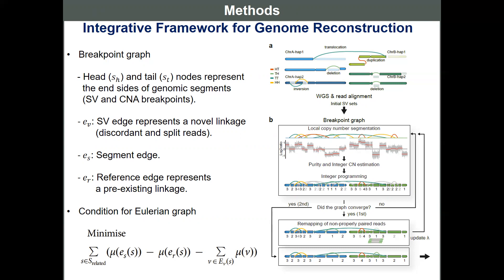Figure A shows an example of cancer genomes that we are going to reconstruct. Several kinds of SVs exist in the different haplotypes of chromosomes A and B. Whole genome sequencing data were generated from this genome, and we start from mapping assembly of WGS reads. From the mapping assembly, we construct a breakpoint graph that is composed of two types of nodes, head and tail nodes, and each node represents each end side of genomic segments, which can be obtained by SV and CNA breakpoints.